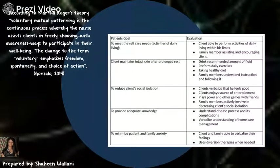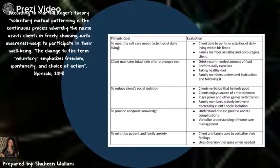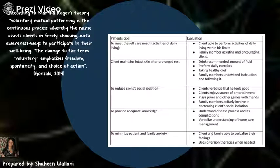Let us now go to the client goals and client evaluation. While setting client goals and evaluation, the nurse should keep in mind that according to Martha Rogers, voluntary mutual patterning is the continuous process whereby the nurse assists the client in freely choosing, with awareness, ways to participate in their well-being. The first patient goal for Mr. Barry is to meet self-care needs. The evaluation would be the client able to perform activities of daily living within his limits, and family members assisting and encouraging the client.